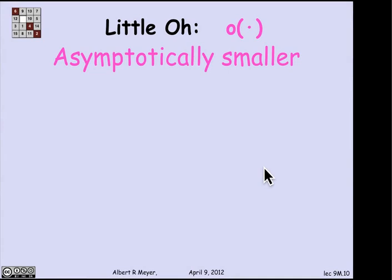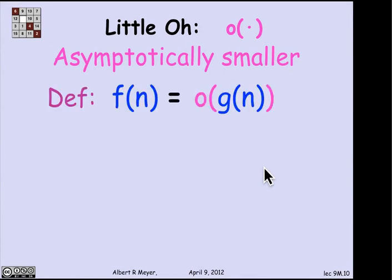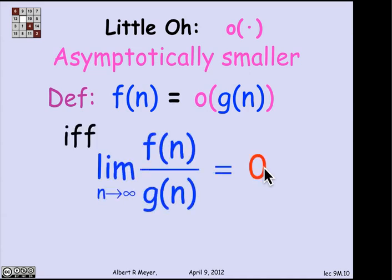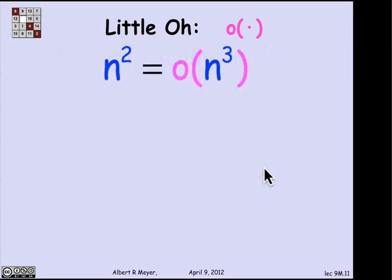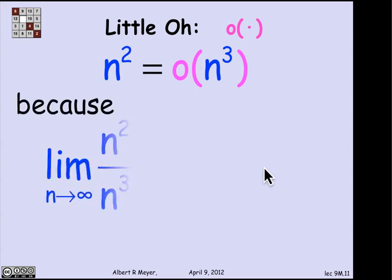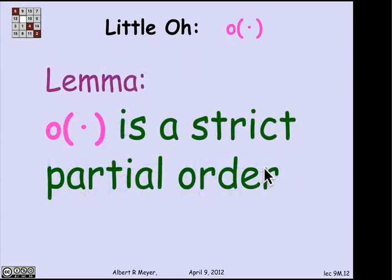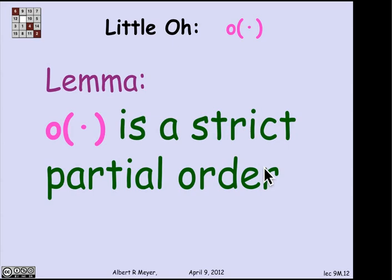The next asymptotic relation is called asymptotically smaller than, and the notation for it is this little o notation. You'd write that f(n) equals little o of g(n) if and only if the limit of f(n)/g(n) goes to 0 as n approaches infinity. For example, n² is little o of n³ because the limit of n²/n³ is the same as the limit of 1/n, and it's equal to 0. By similar reasoning, it's not very hard to prove that little o defines a strict partial order on functions.